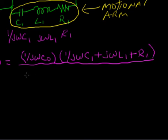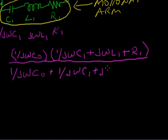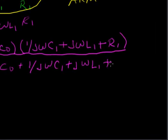1 over J omega C1 plus J omega L1 plus R1. All of that with the sum. So it's simply, we just don't have any brackets anymore on the bottom: 1 over J omega C0 plus 1 over J omega C1 plus J omega L1 plus R1.